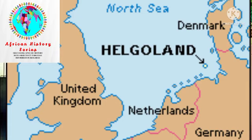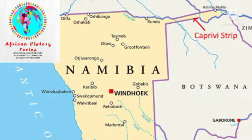The offer of Heligoland, which is located in the North Sea, was very important to the Germans. At the same time, the British also gave the Caprivi Strip to the Germans.